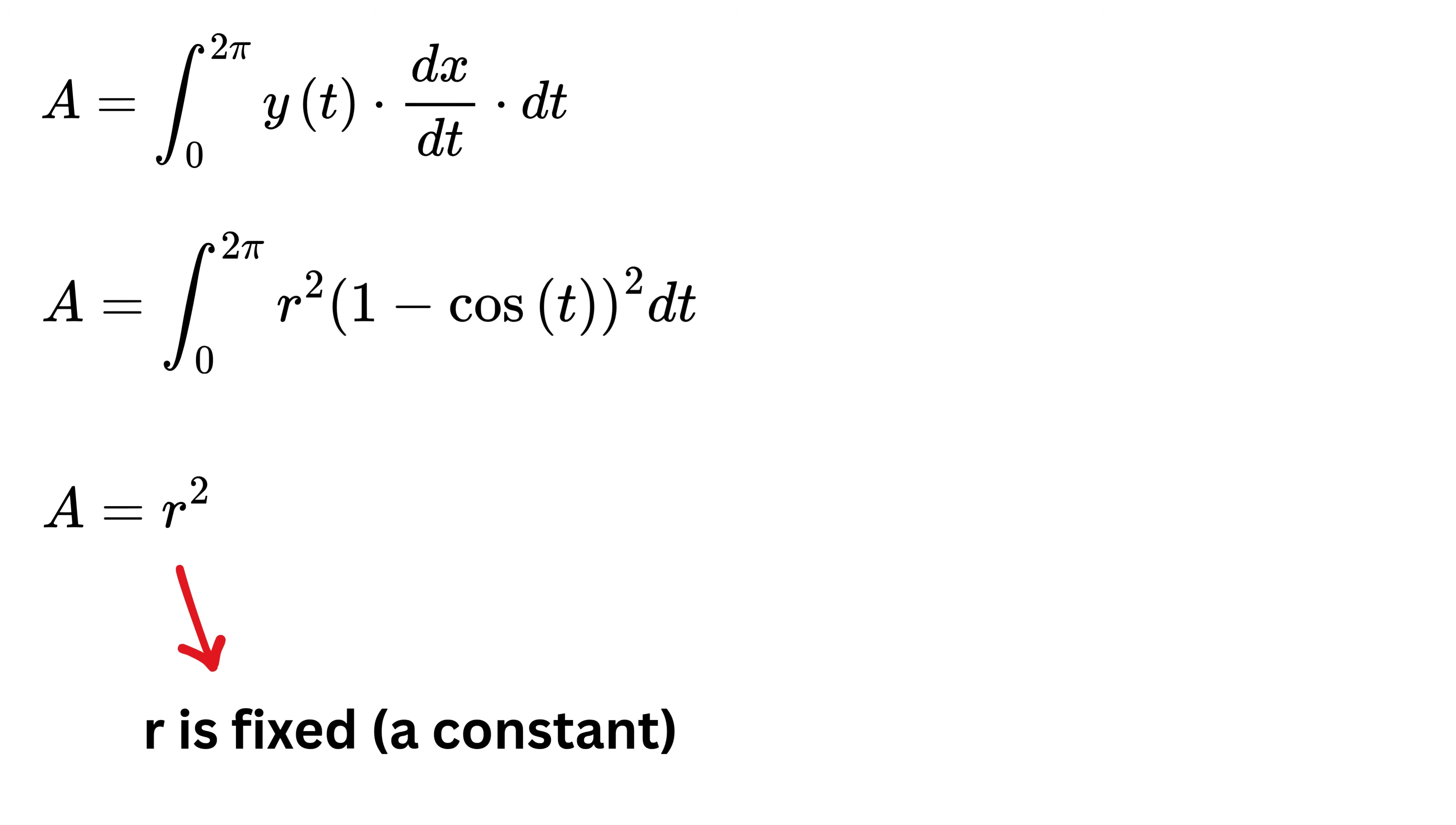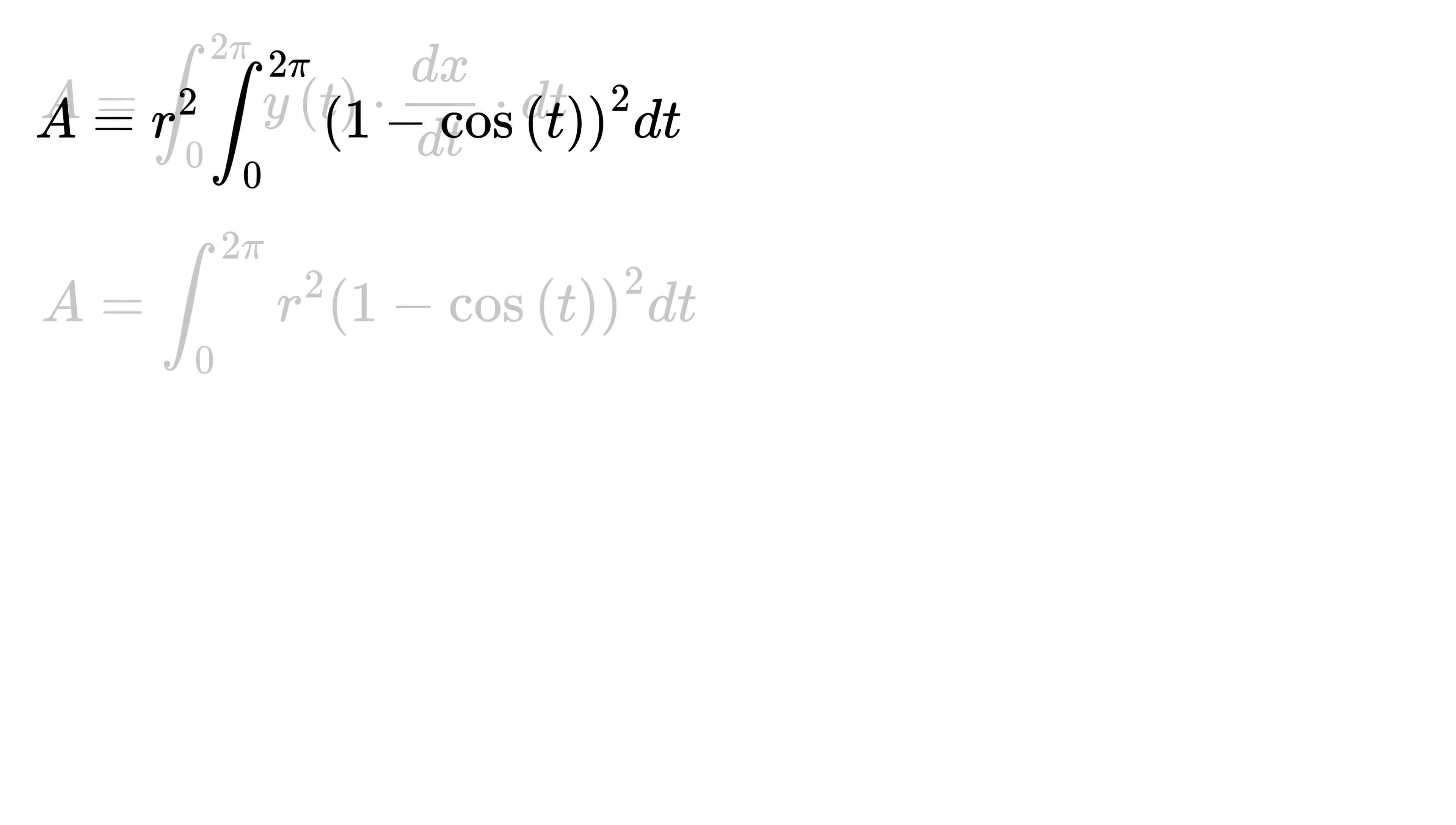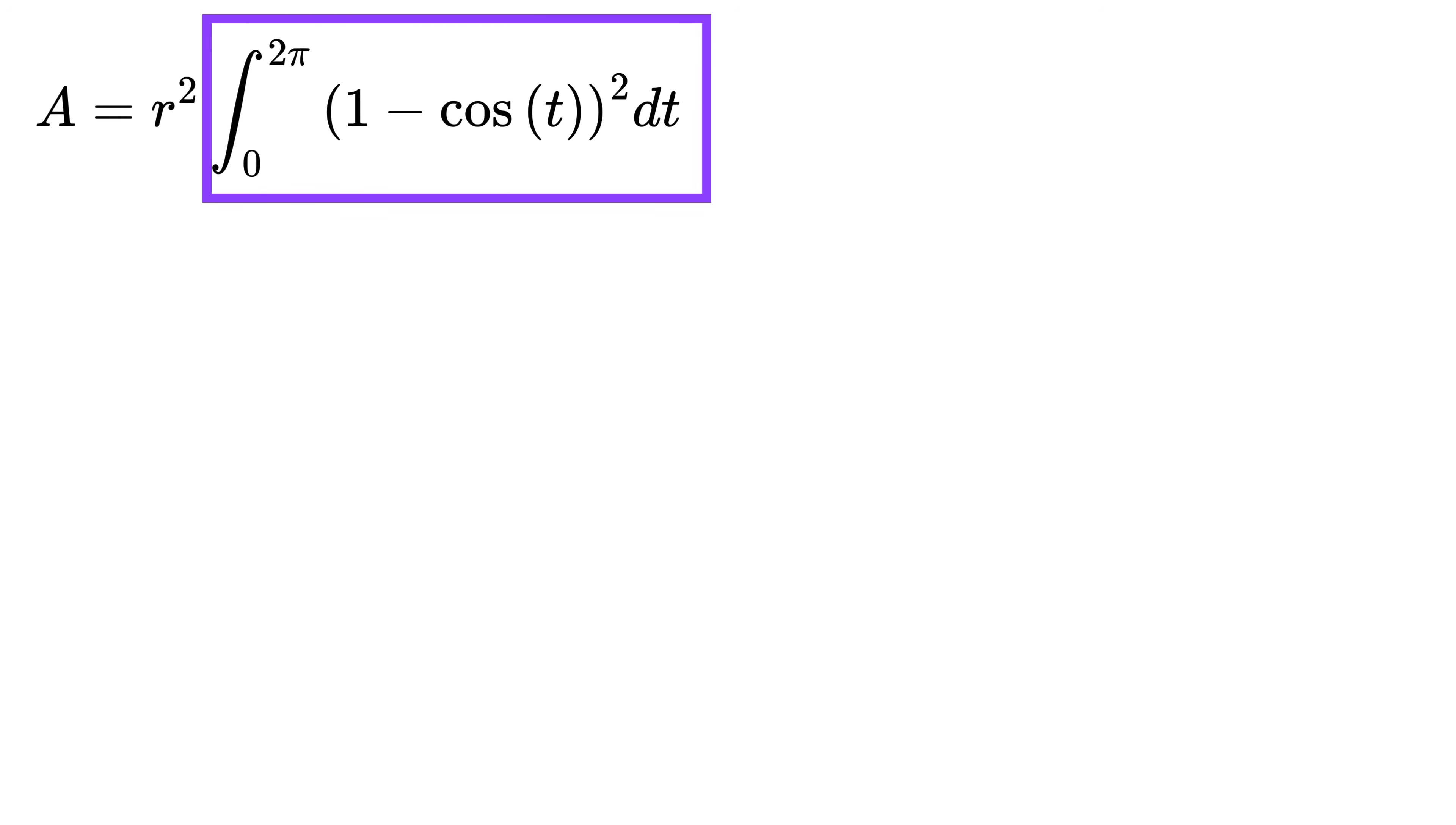So the area becomes R square times integral 0 to 2 pi of 1 minus cos T whole square times dt. All the heavy work is done, and now we just need to solve this simple integral.